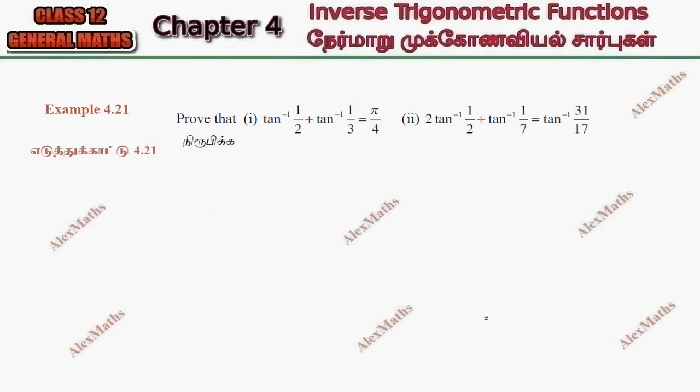Hi students, this is Alex here. Example 4.21. Prove that tan inverse one-half plus tan inverse one-third equals pi by 4.